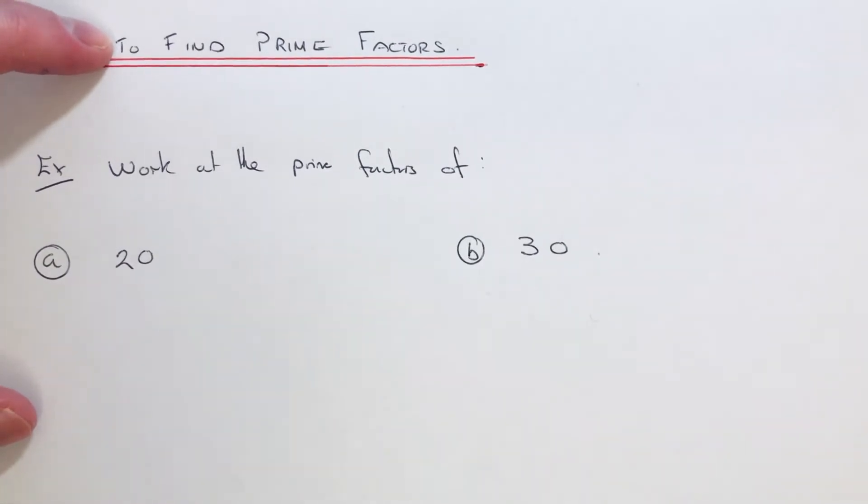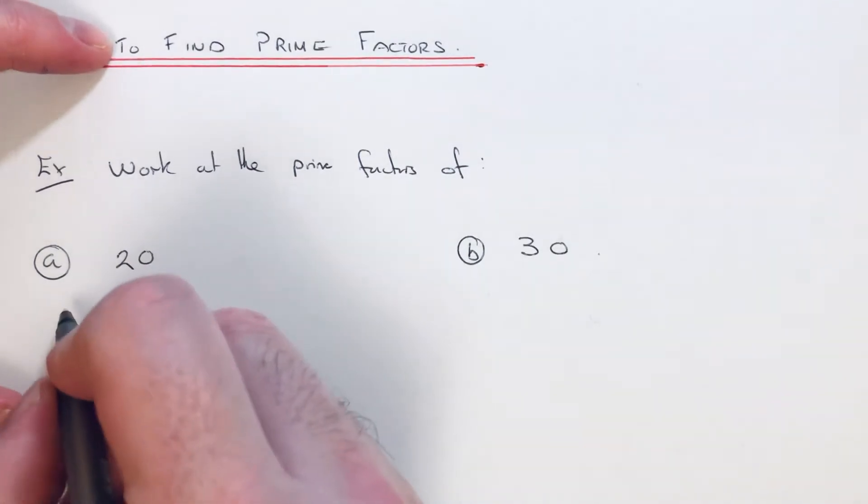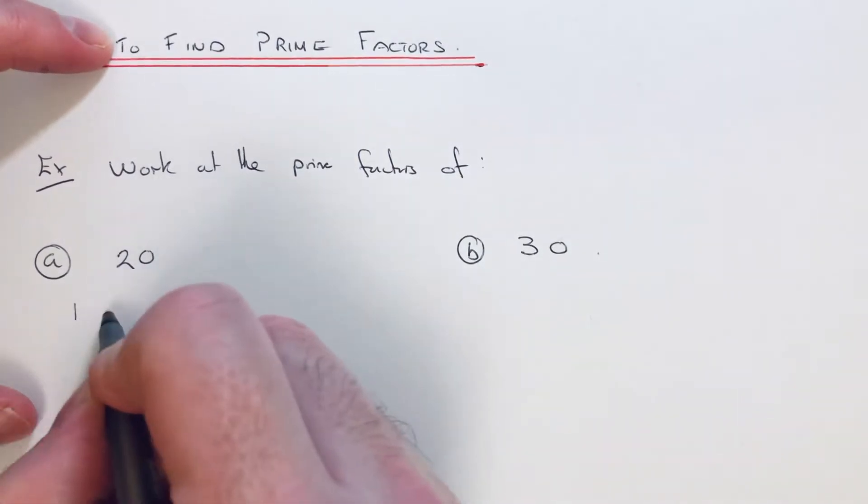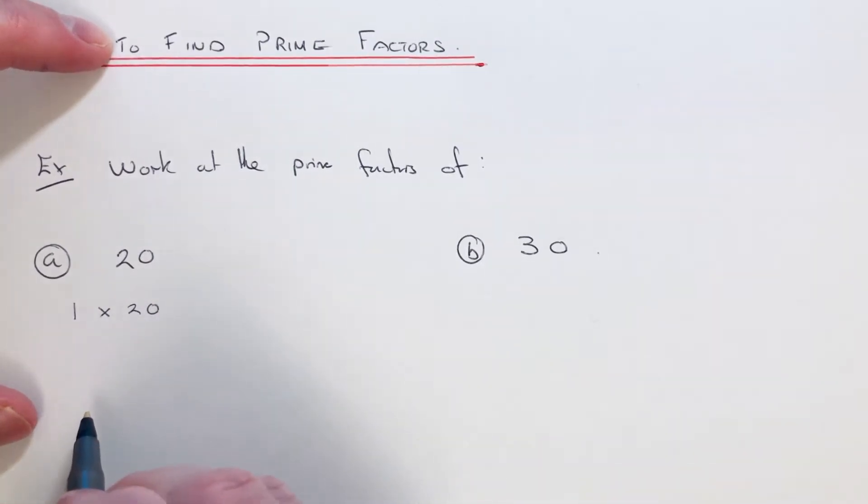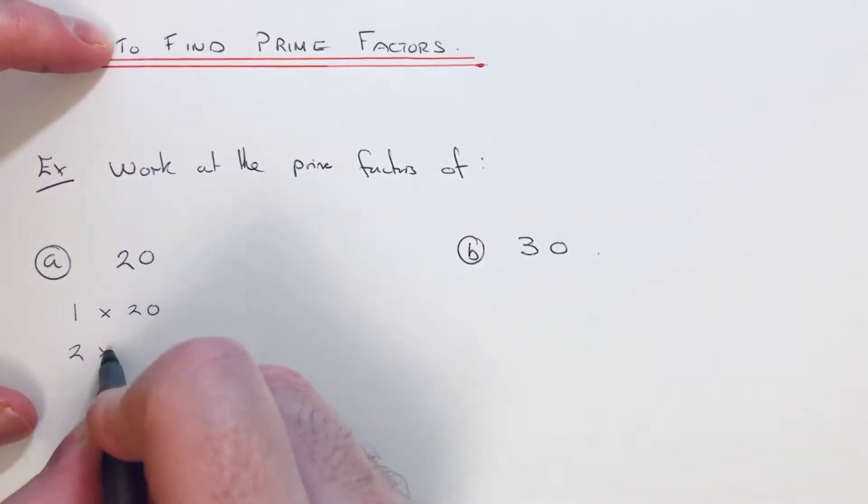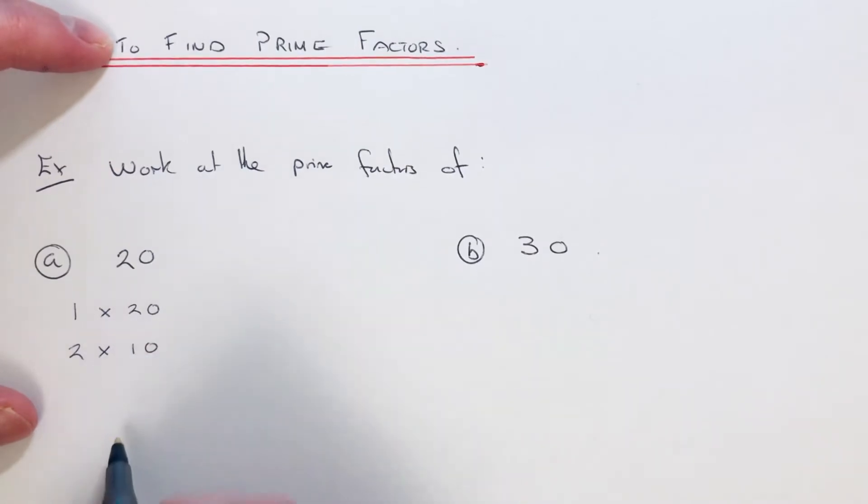Start off with your 1 times table. 1 goes into 20 20 times. Then 2 goes into 20 10 times. 3 doesn't go into 20. 4 goes into 20 5 times, and there won't be any more factors of 20.